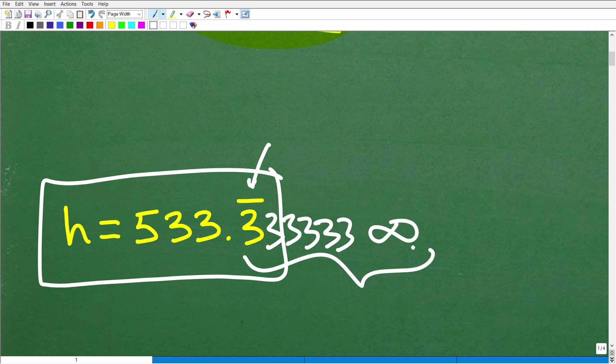So you and I don't have the time to write all those 3s out, so we just put a little bar over that. That just means that that digit repeats.